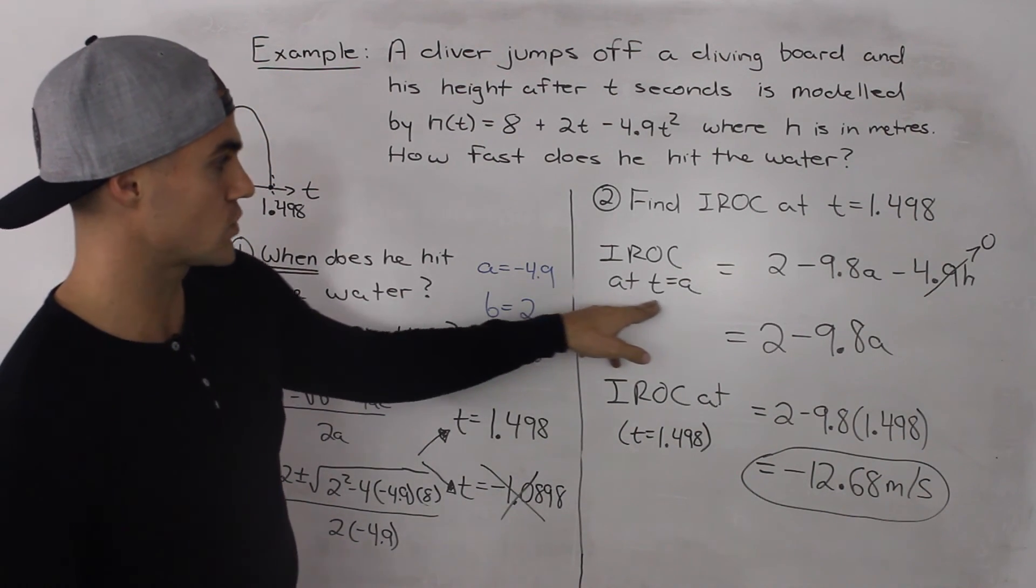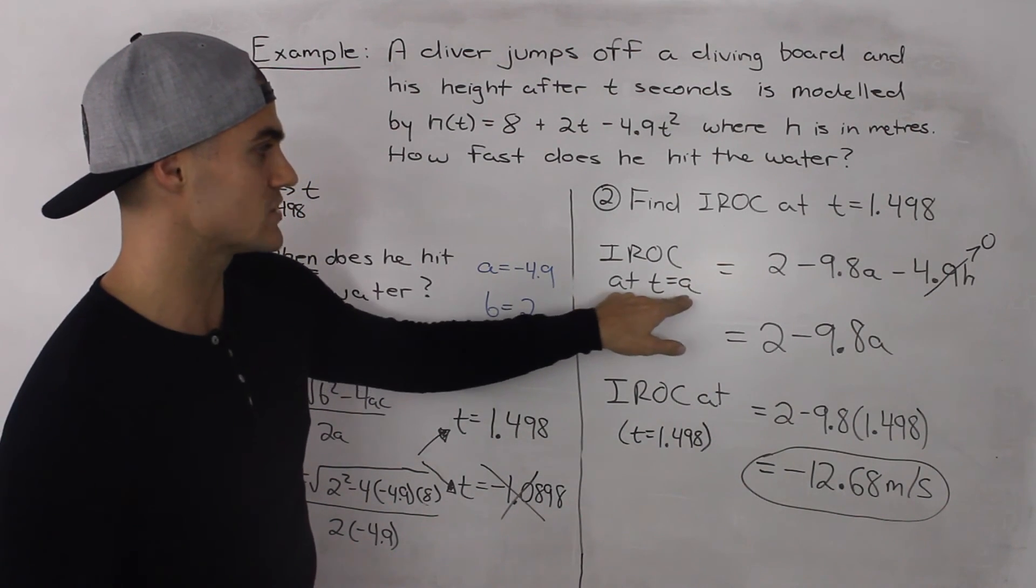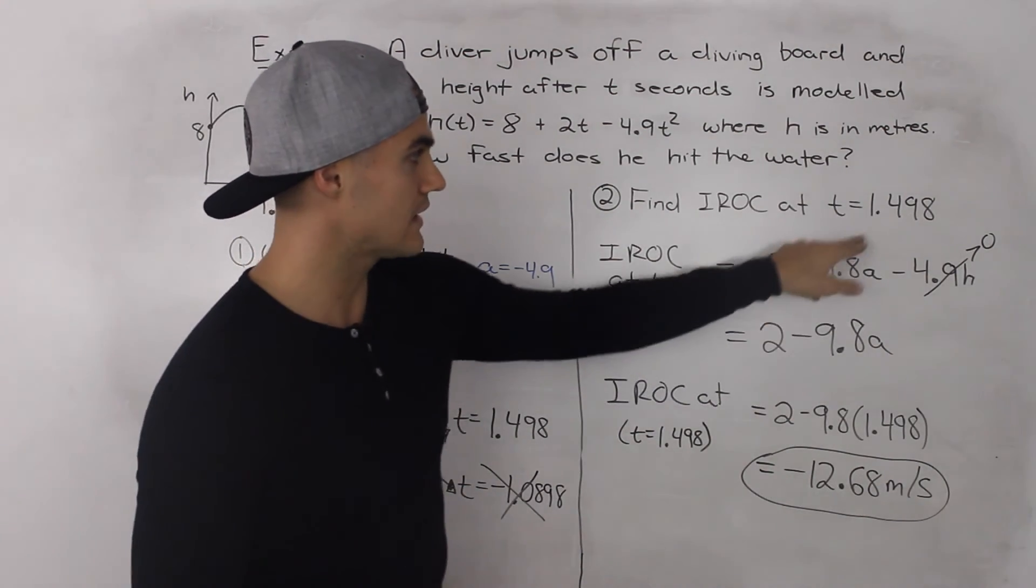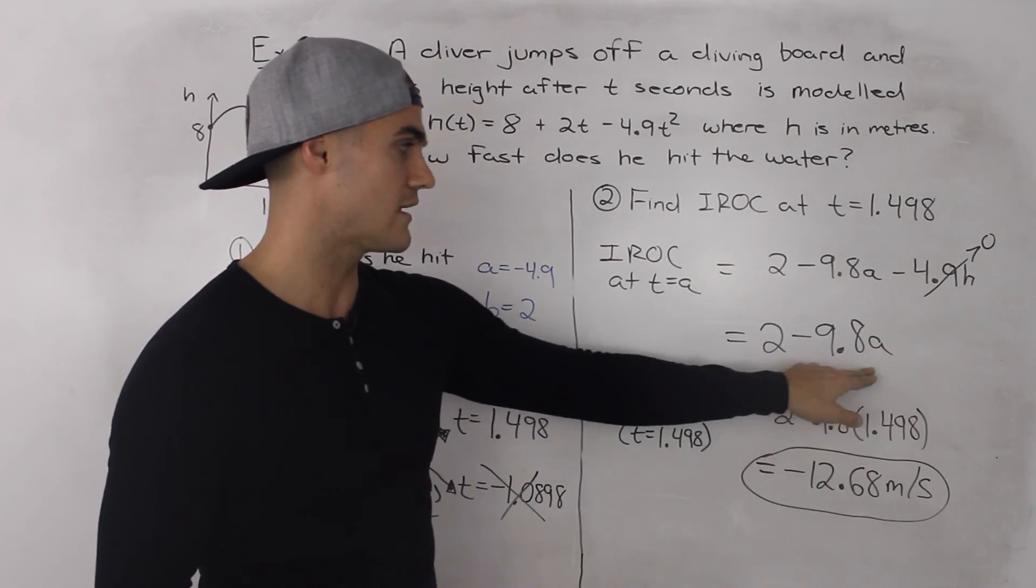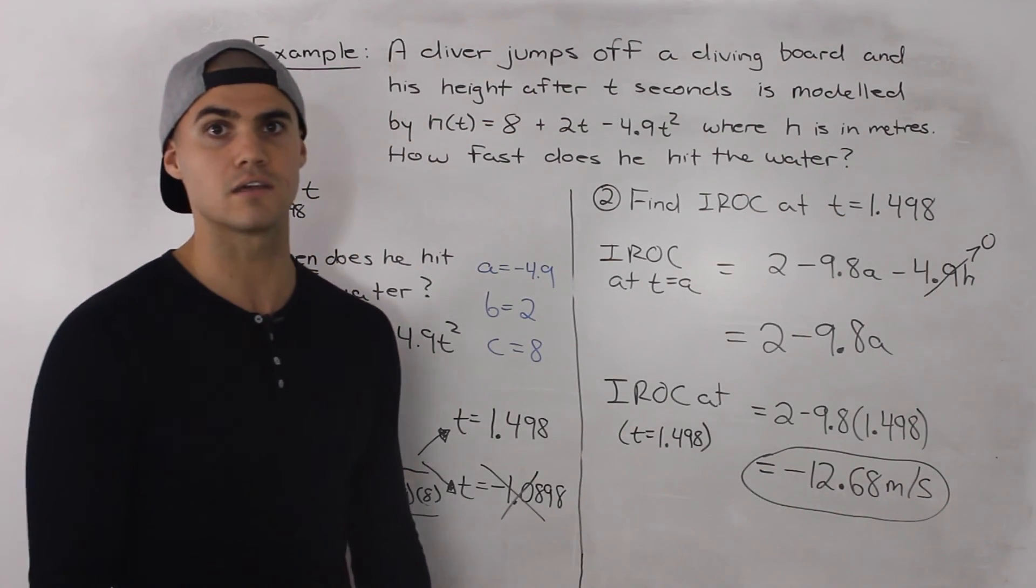So you would use the difference quotient and find a general expression for when t equals a, not a specific time but a general time. And then all you do is you plug in that time that you're specifically looking for in the general expression. And you get how fast he hits the water. And that is the answer. Thank you.